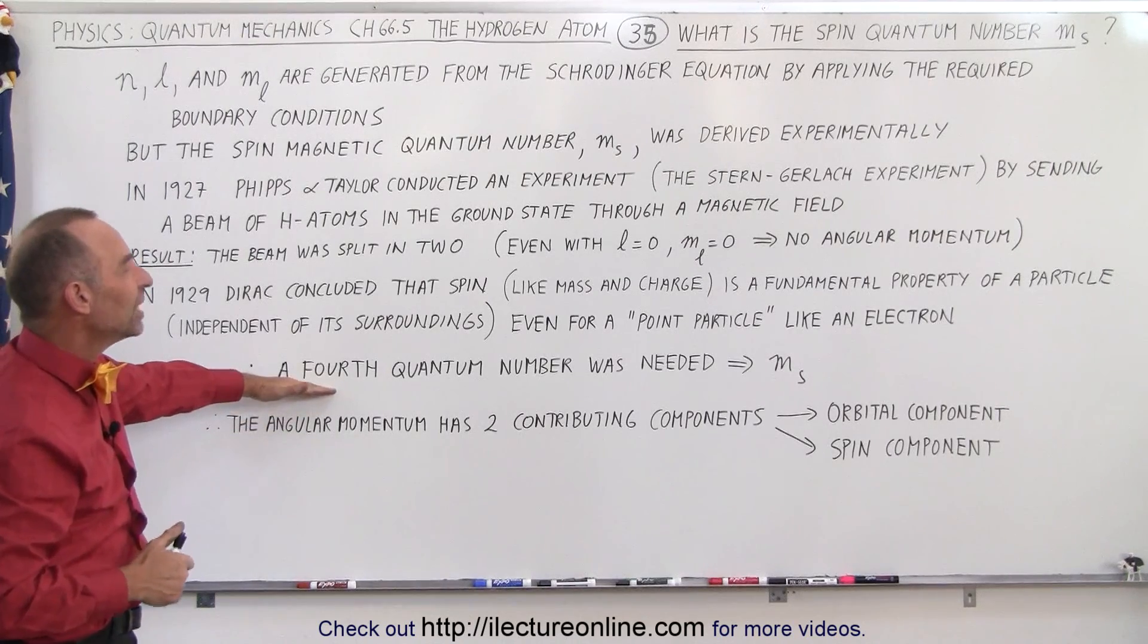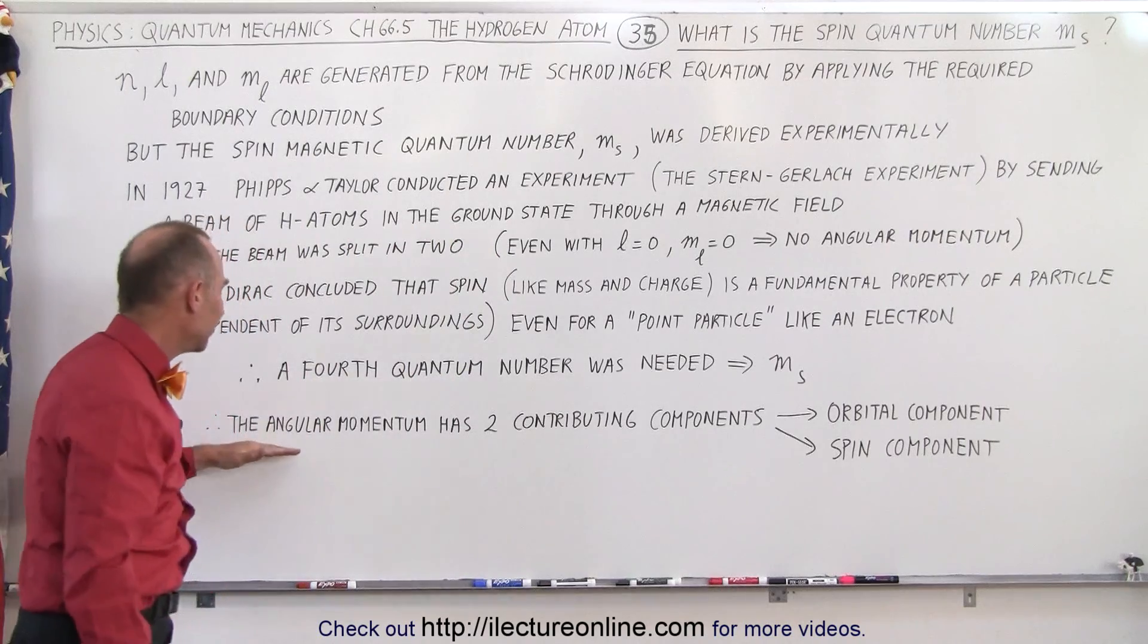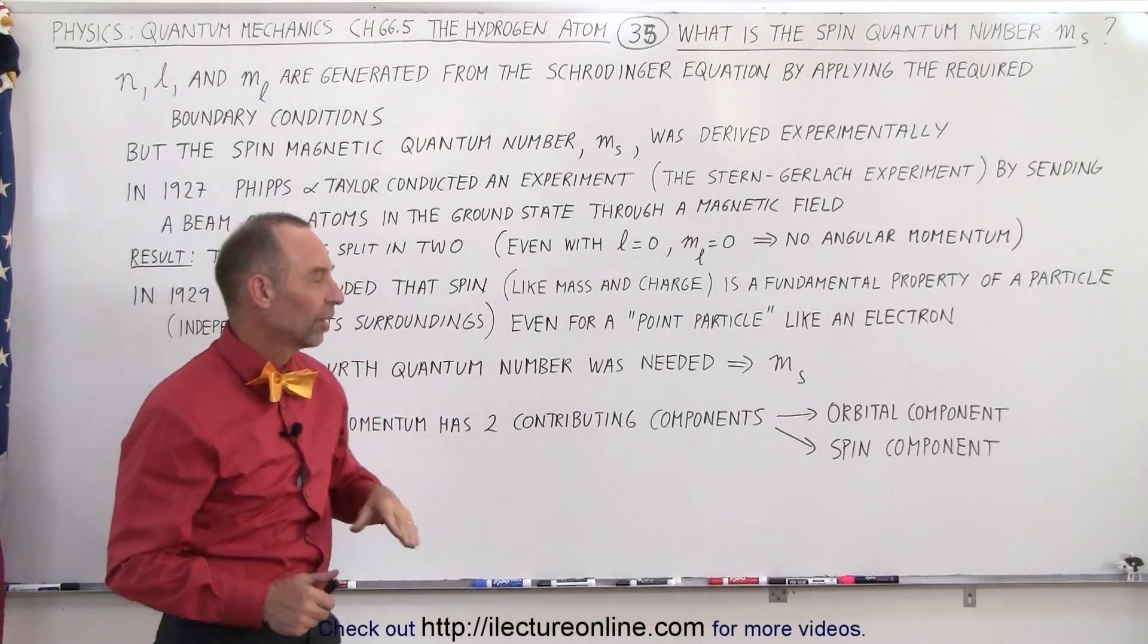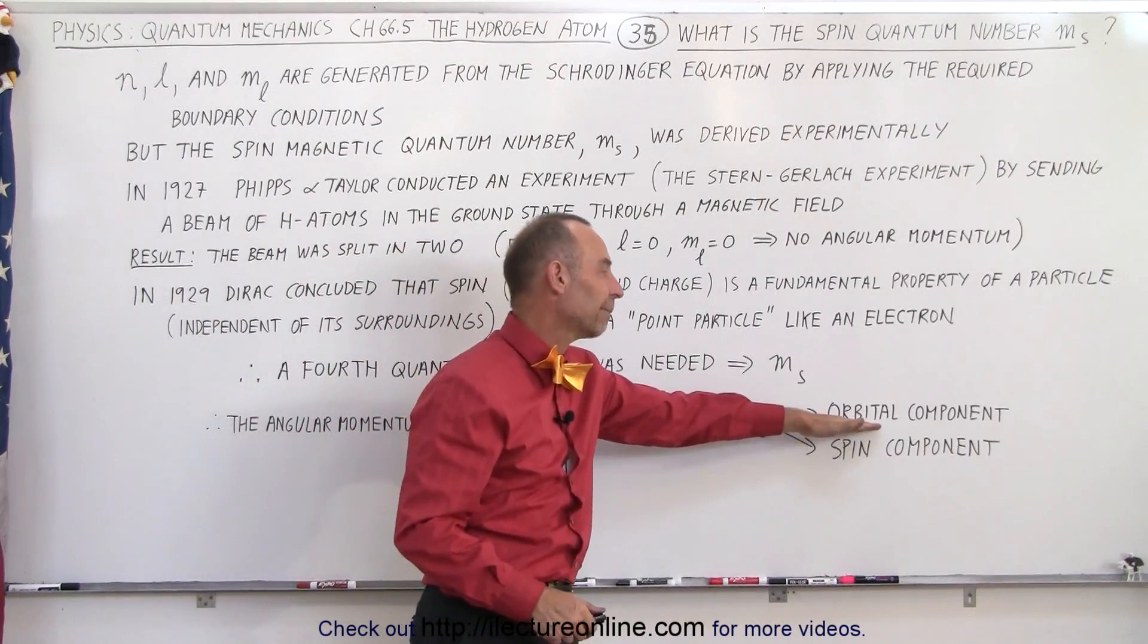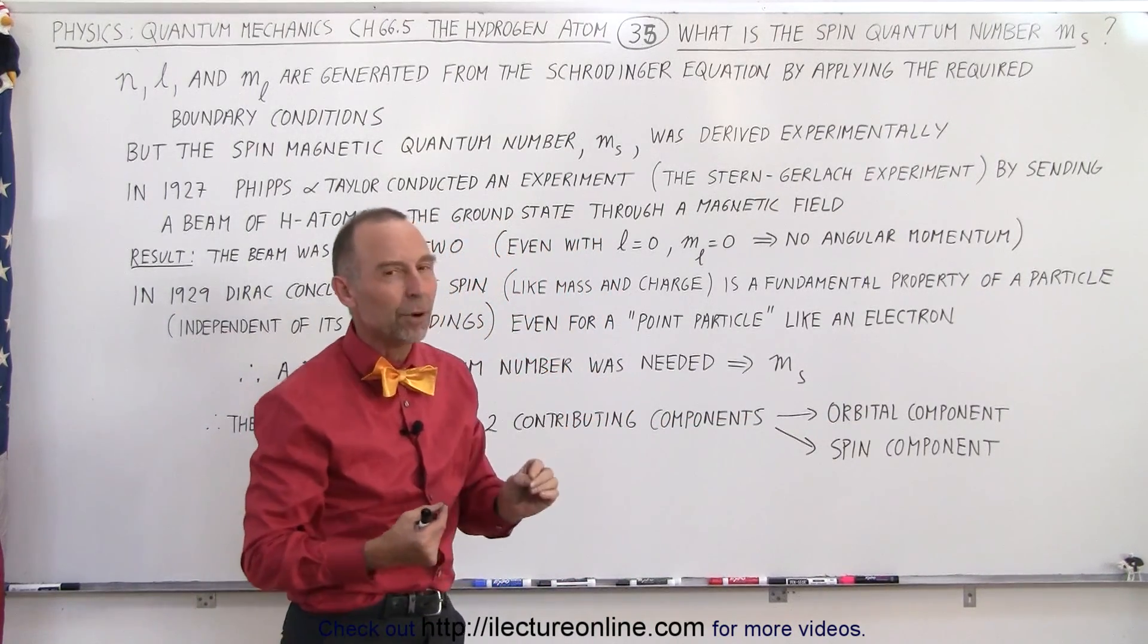So a fourth quantum number was needed, we call it the spin quantum number M sub S. That means that the angular momentum has now two contributing components: orbital component and spin component.